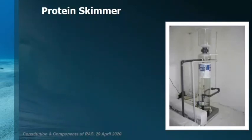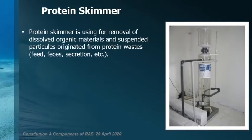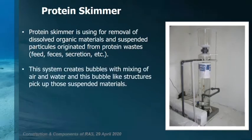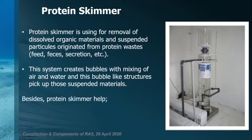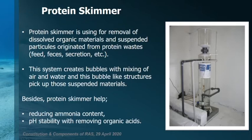A protein skimmer is used for removal of dissolved organic materials and suspended particles originating from protein wastes such as feed, feces, and secretions. This system creates bubbles by mixing air and water, and these bubble-like structures pick up those suspended materials up to the surface. Most protein skimmers are used in marine freshwater units. Protein skimmers also help reduce ammonia content and improve pH stability by removing organic acids.